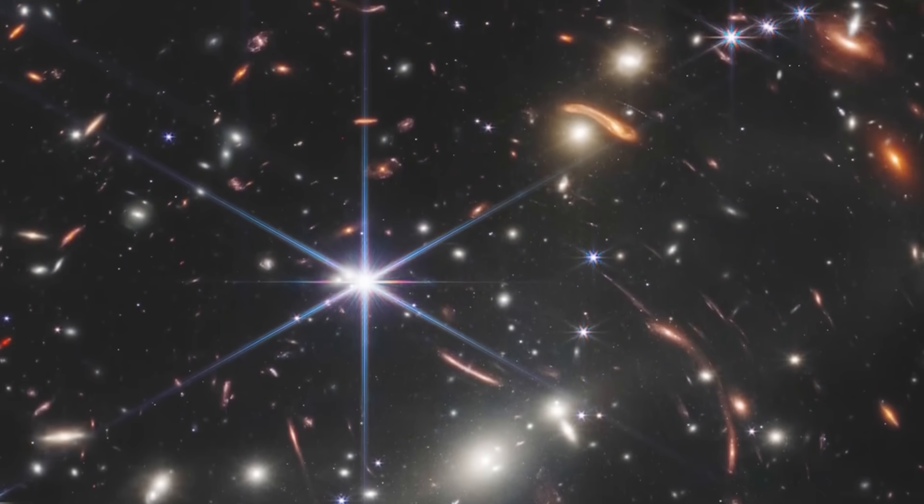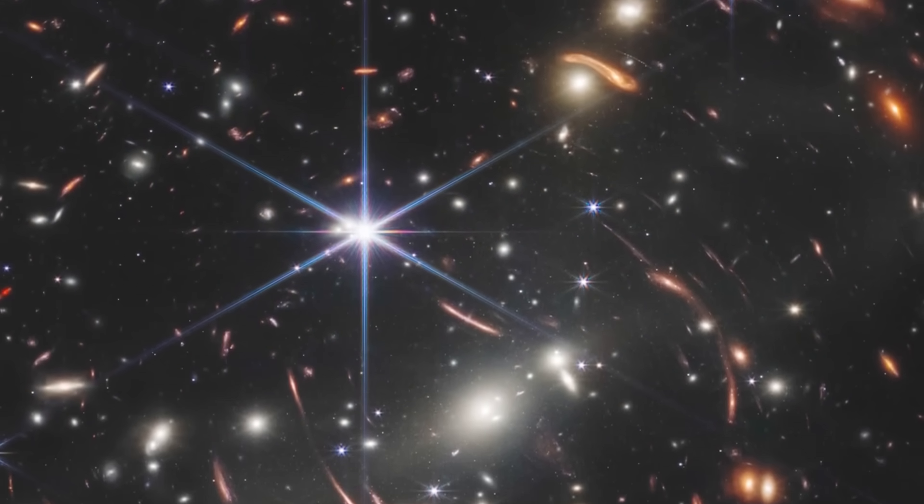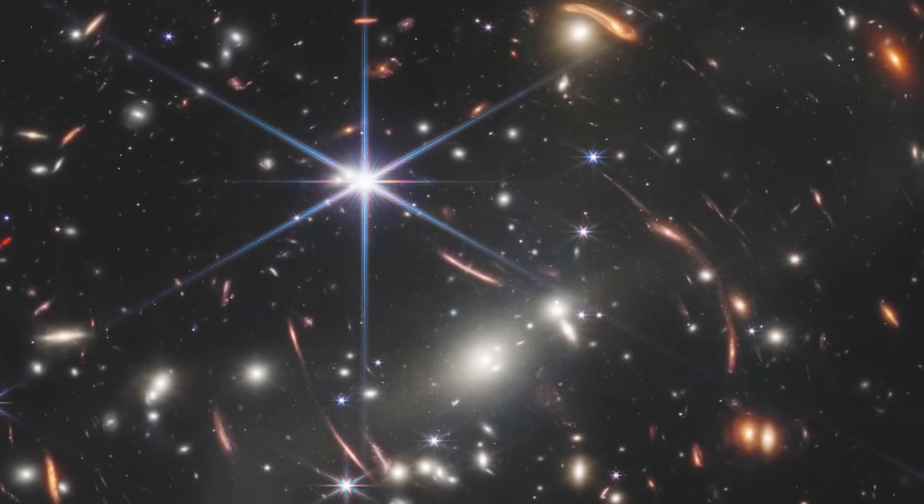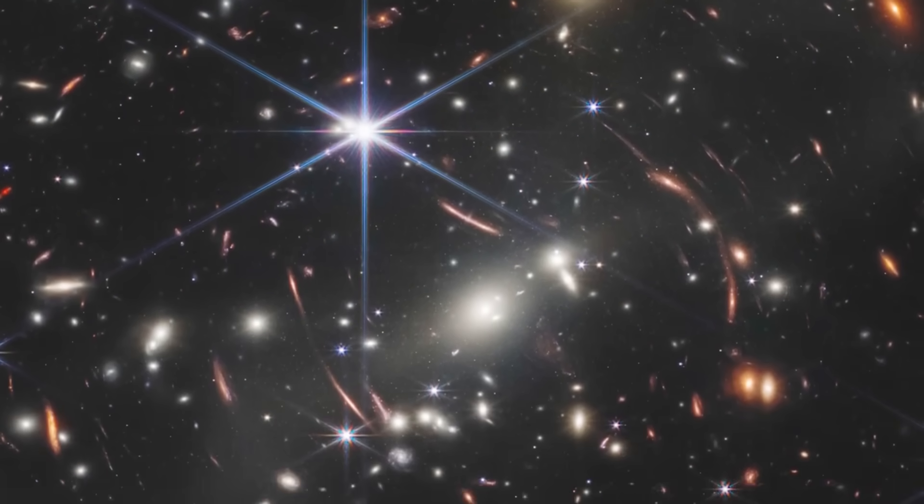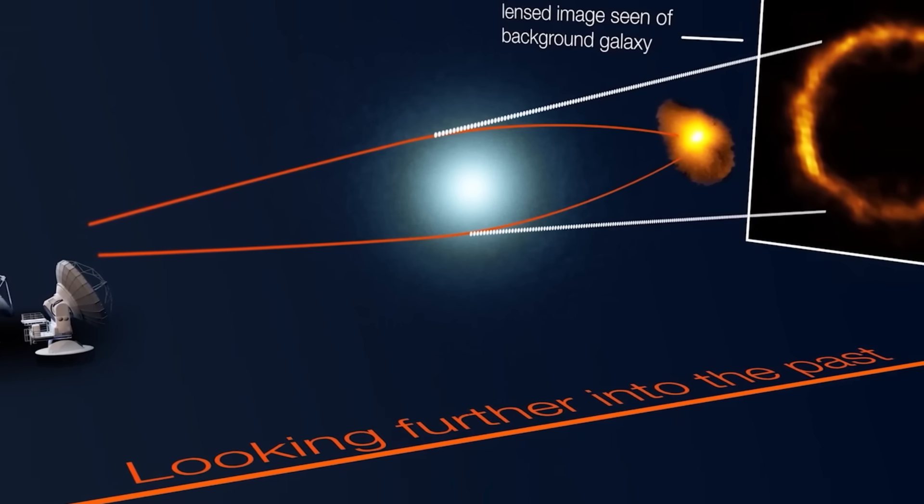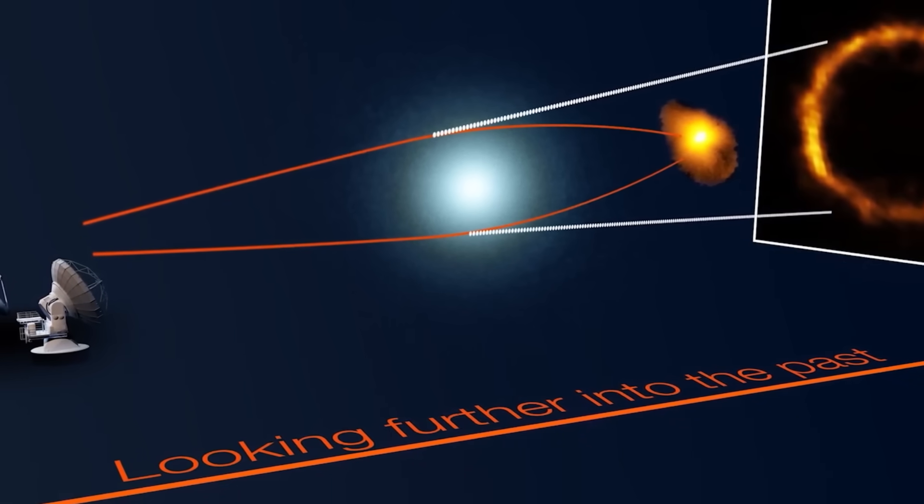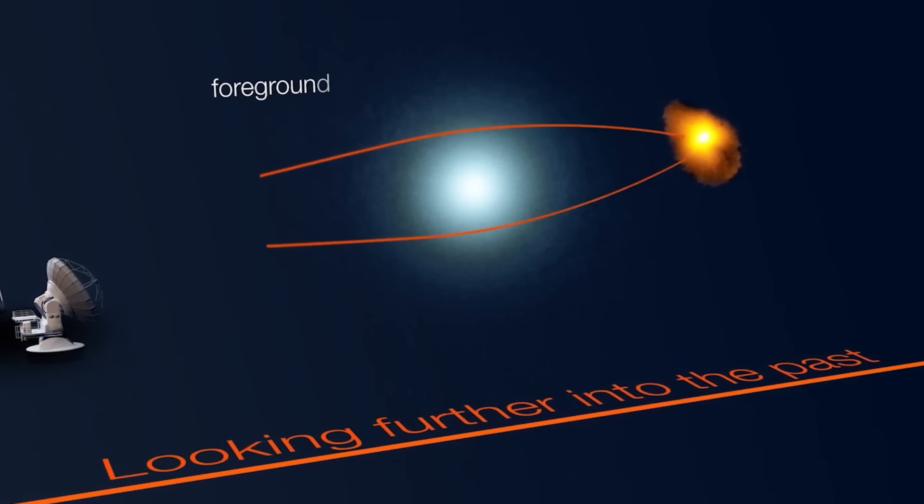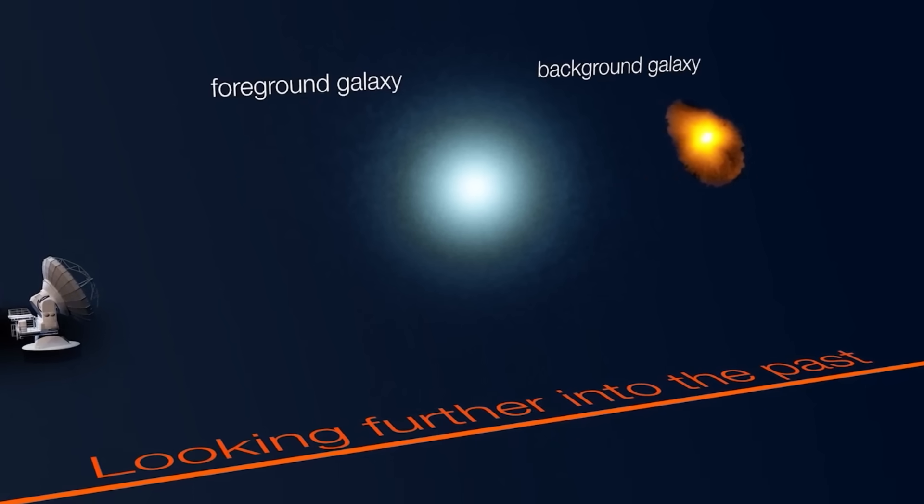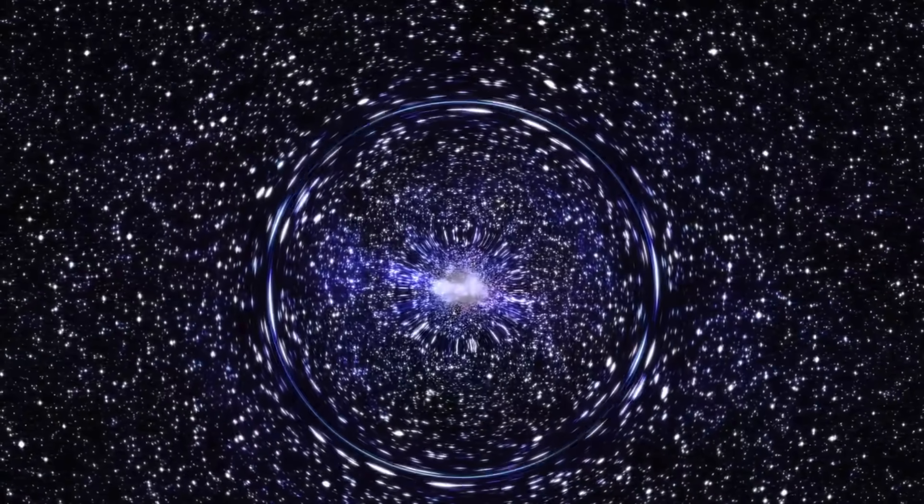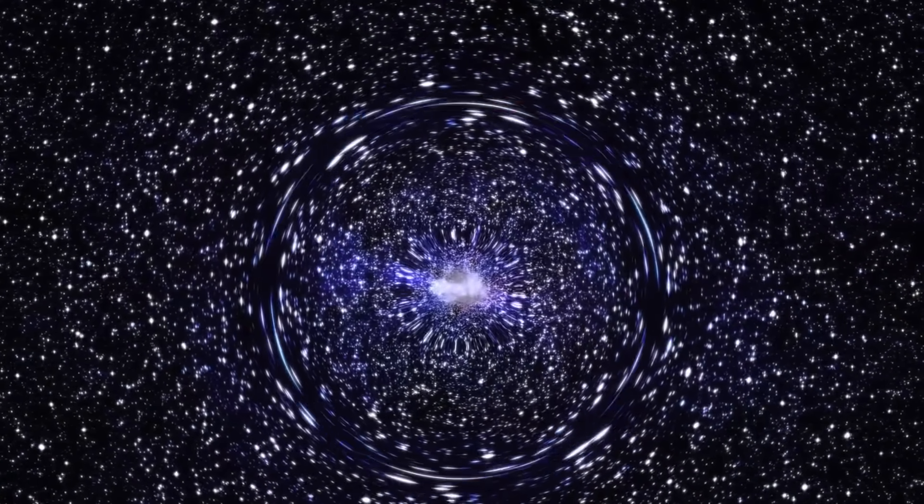But the ring didn't just look beautiful—it told a darker story. Because the light had been stretched and curved not just by gravity, but by time itself. We were looking at a message from the past, bent into shape by the invisible architecture of the cosmos. And some began to ask: what if these rings, these distortions, are windows—not just to distant galaxies, but to deeper truths about the shape of our universe and its origin?